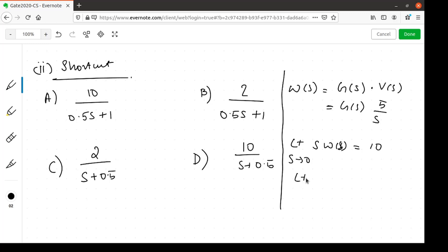We will substitute for omega of s as g of s times 5 by s, which implies limit s tending to 0, s times g of s times 5 by s equals 10. S and s would get cancelled. We will get limit s tending to 0, g of s, and taking the 5 to the other side, equals 2.